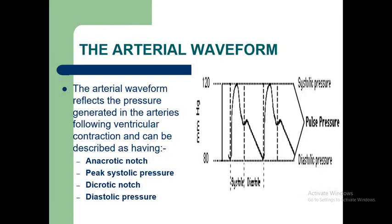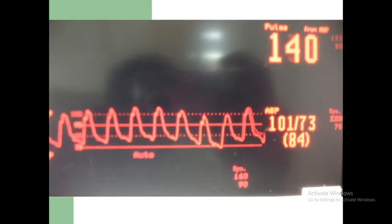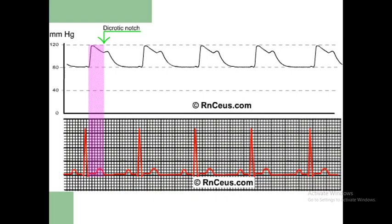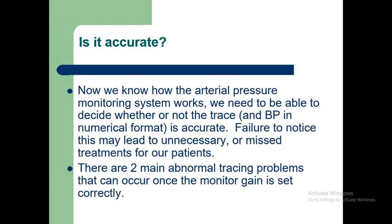The arterial waveform reflects the pressure generated in the arteries following ventricular contraction, and can be described as having an anacrotic notch, peak systolic pressure, dicrotic notch, and diastolic pressure. The dicrotic notch occurs when the heart relaxes and pressure briefly backfires — this represents aortic valve closure.